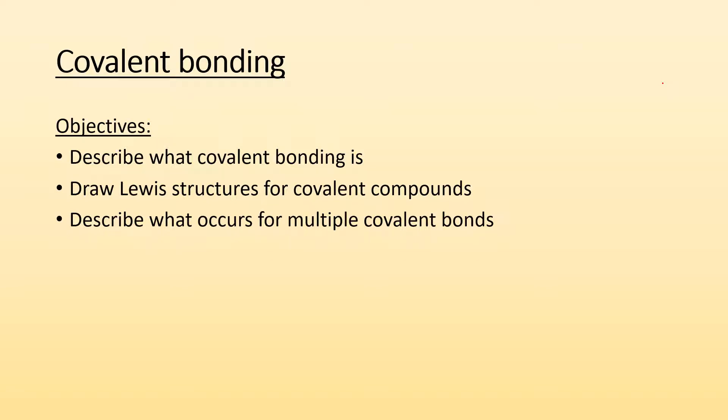How's it going ladies and gentlemen, Mr. Donahue here again. This time we're going to take a look at covalent bonding. Specifically, our objectives will be to describe what covalent bonding is, draw Lewis structures for covalent compounds, and describe what occurs for multiple covalent bonds, double bonds, triple bonds. So let's get started.